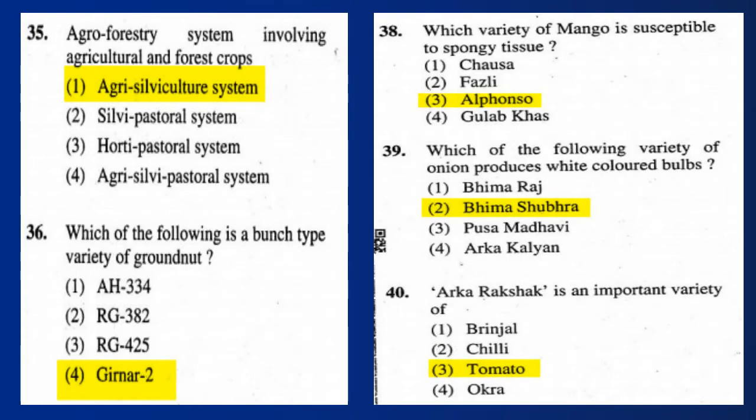Question 35: The agroforestry system involving agricultural and forest crops is the agri-silviculture system. Question 36: Which of the following is a bunch-type variety of groundnut? Answer: Girnar 2.